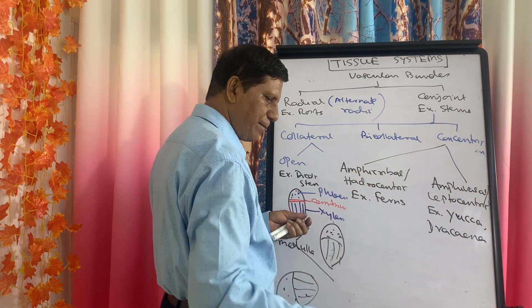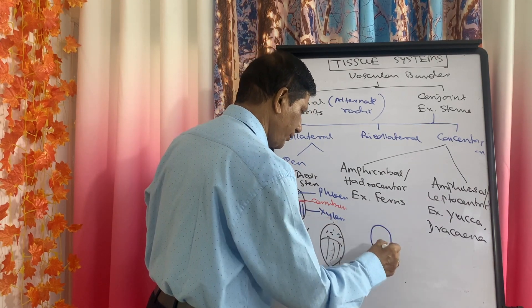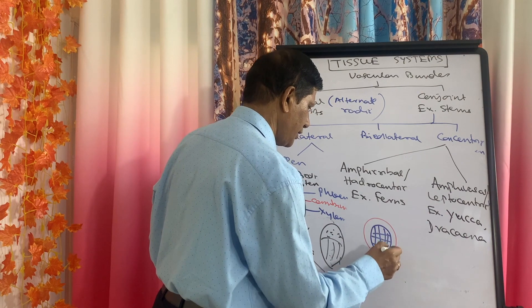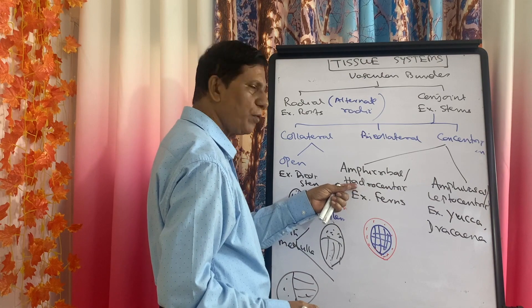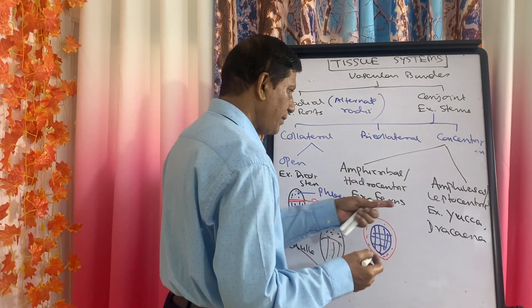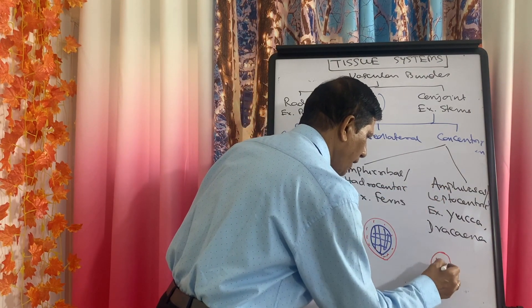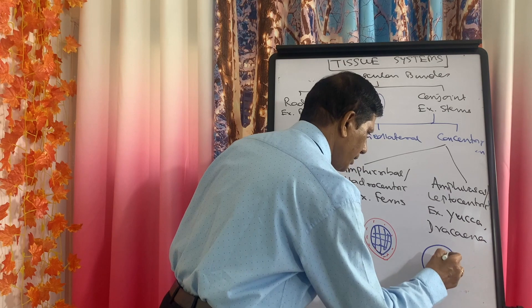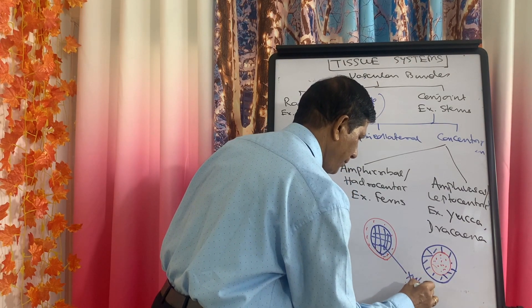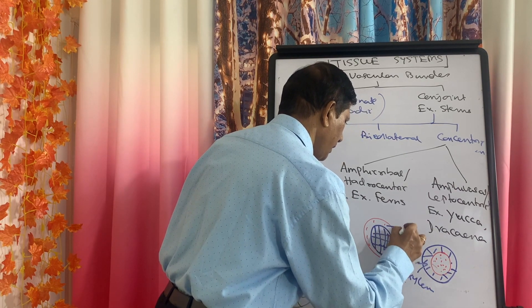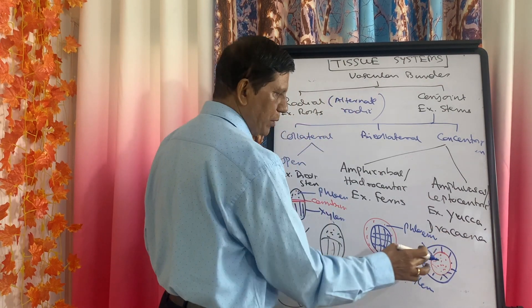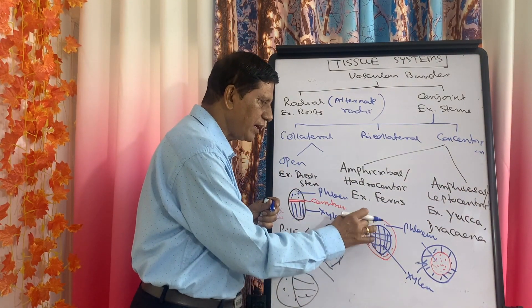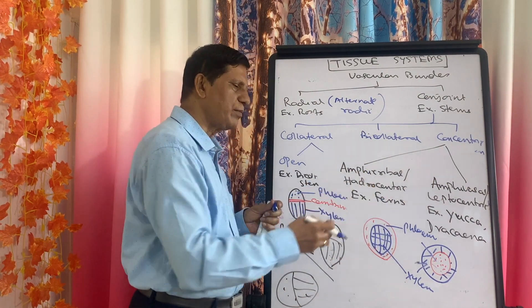In the amphicribal or hydrocentric type, xylem is present in the center and phloem surrounds it. In the amphivasal or leptocentric type, phloem is present in the center and xylem surrounds it — characteristic of Yucca and Dracaena. When xylem is central and phloem is peripheral, it is amphicribal or hydrocentric, as seen in ferns.